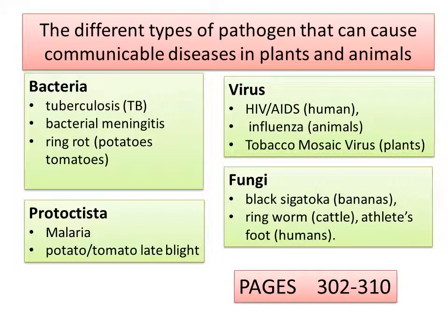The four main types of pathogen you need to be aware of are: bacteria — with examples including TB, bacterial meningitis, and ring rot in potatoes and tomatoes; viruses — HIV, influenza and tobacco mosaic virus in plants; fungi — black sigatoka in bananas, ringworm in cattle and in people, and athlete's foot in humans; and protoctists — including malaria and potato and tomato blight. Those are the examples you are expected to know, including what causes each of those diseases.